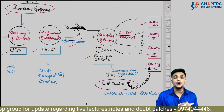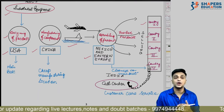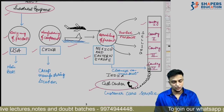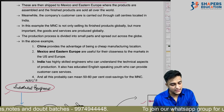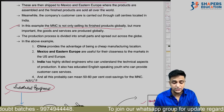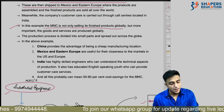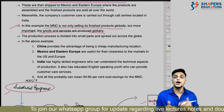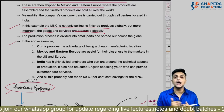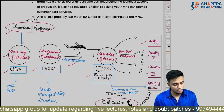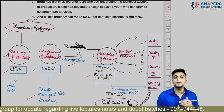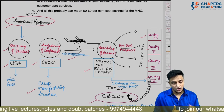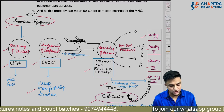Coming to India — because India has many educated people, India handles customer care and call center work. The MNC is not just selling finished products; more importantly, the manufacturing process is happening globally across different countries. China benefits as a cheap manufacturing location; Mexico and Eastern Europe are chosen for closeness to markets.